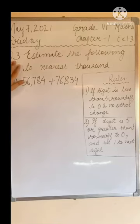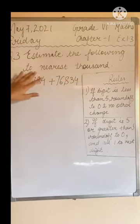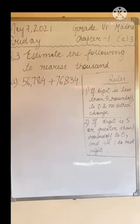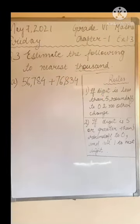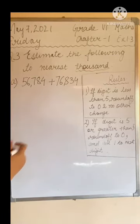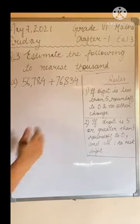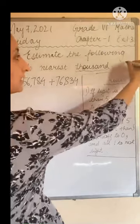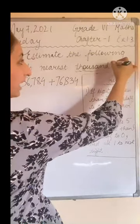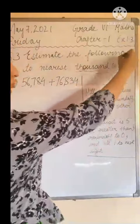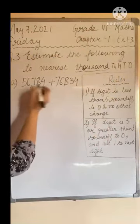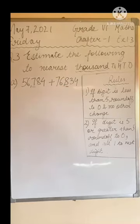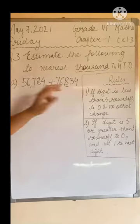Now let's start with question number 3: estimate the following to the nearest thousands. The place given to us is the thousands place, so we are going to take the digit which is 1 less than that place. We have 1s, 10s, 100s, and then 1000s — so we will choose the 100s place. That means we look at the 1s, 10s, and 100s digits, which are the digits we need to round off this time.